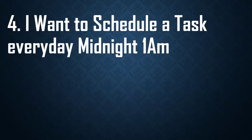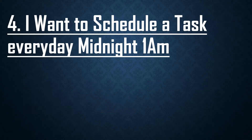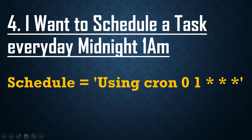For the task, we should mention the schedule using a cron job. The cron expression is: 0 1 * * * — this means every day at 1 AM. The fields represent minutes and hours, so 0 1 schedules it at 1 AM every day.